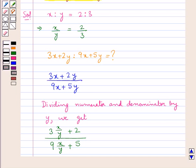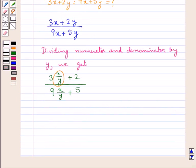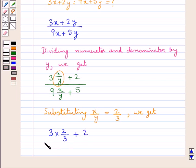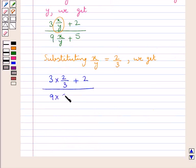Now we will put the value of x upon y as 2 upon 3. So substituting x upon y equal to 2 upon 3, we get 3 into 2 upon 3 plus 2 upon 9 into 2 upon 3 plus 5.